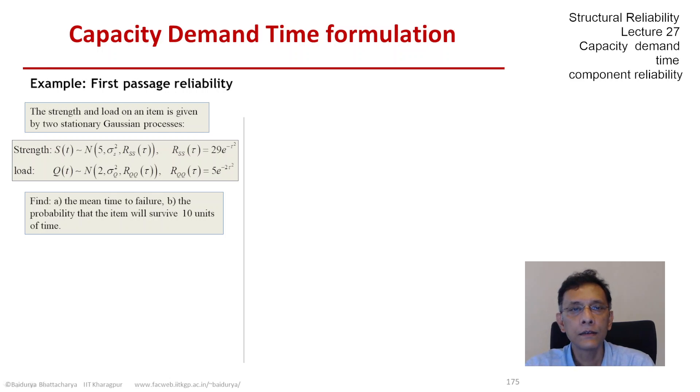We need to find the mean time to failure and the probability that the item will survive 10 units of time, so the reliability at time 10.